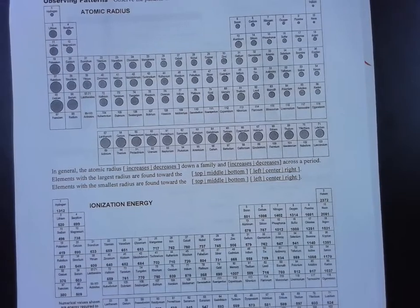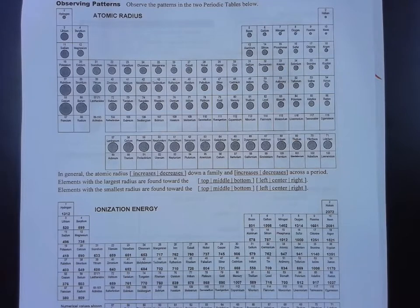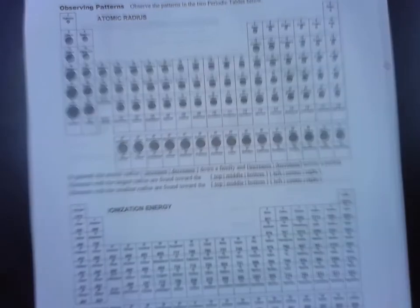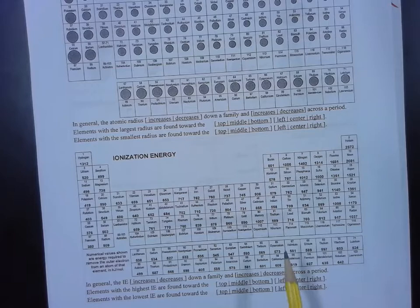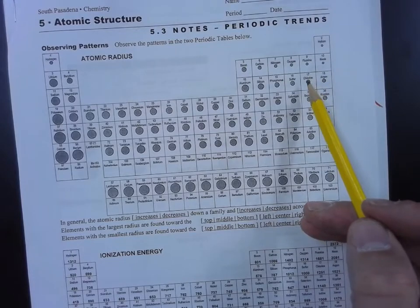Okay, notes 5.3, part 2. We're going to discuss ionization energy. I'll tell you what it is first, then the trend, and then we'll revisit it. Ionization energy is the energy needed to remove an electron from a neutral atom.